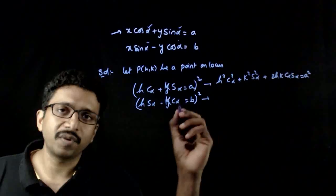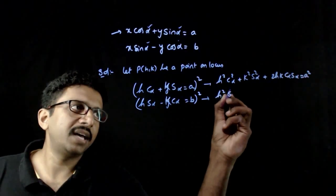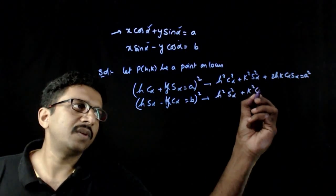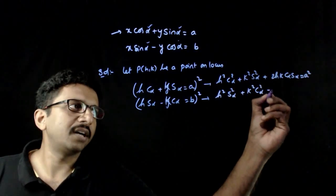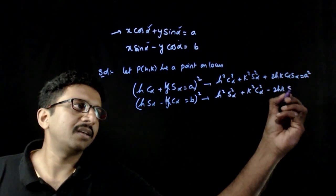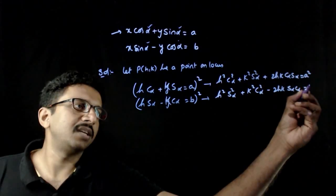And on this side, if you square it on both sides, h square sin square alpha plus k square cos square alpha minus 2hk sin alpha cos alpha is equal to b square.